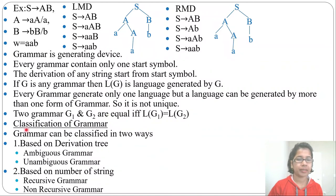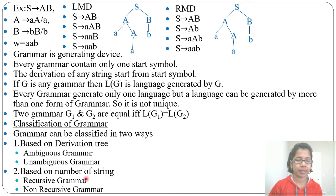Hi, in the previous lecture I discussed classification of grammar. Grammar can be classified in two ways: first is based on derivation tree, and second is based on number of strings. Based on derivation tree, grammar can be divided into ambiguous grammar and unambiguous grammar. Based on number of strings, grammar can be divided into recursive grammar and non-recursive grammar.